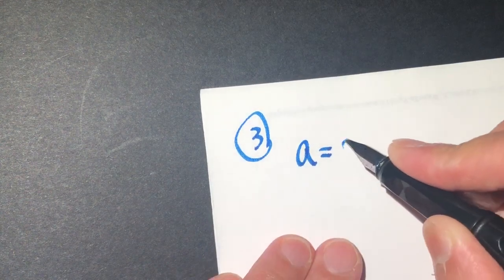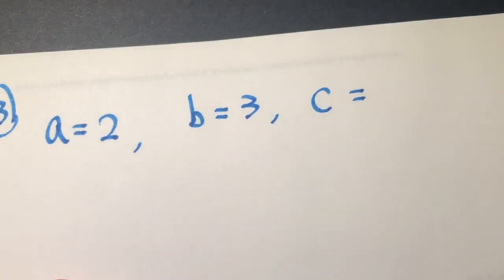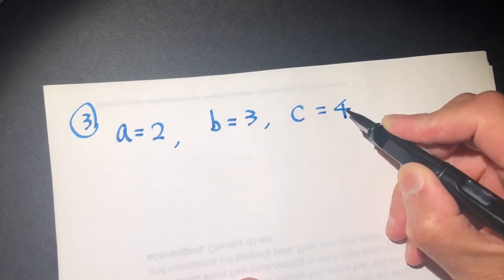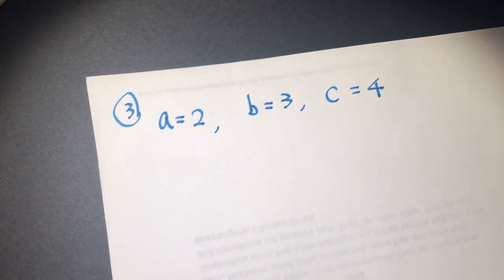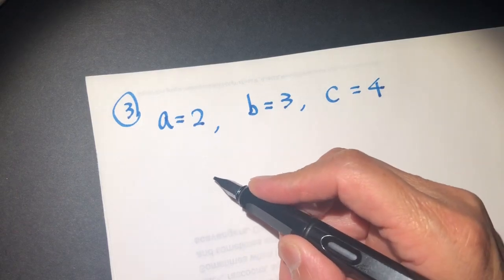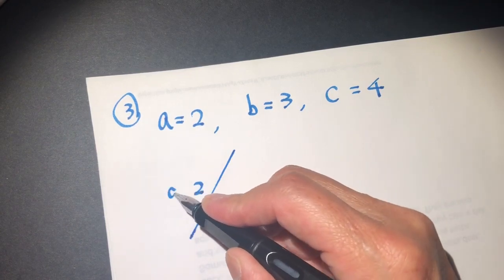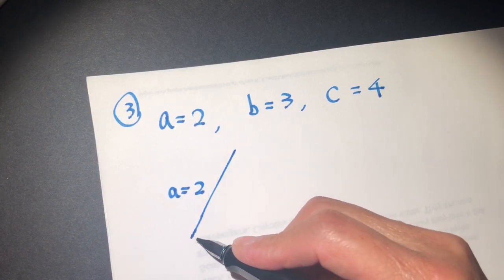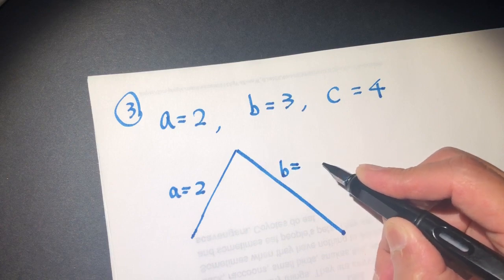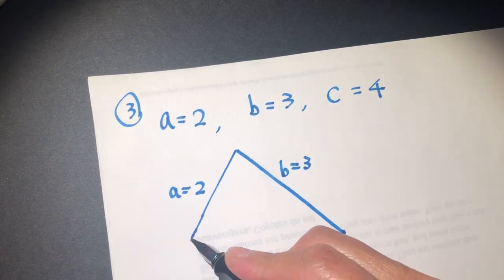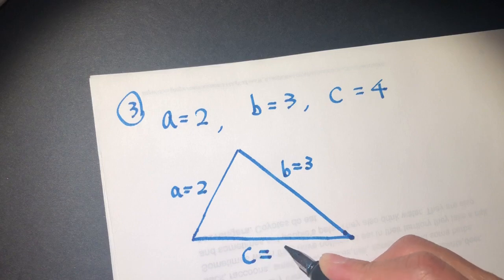I copy the problem — question number three. A equals 2, B equals 3, C equals 4. So we have three sides given. To begin with, we will need to draw the picture. We have one side A equal to 2, another side B equal to 3, and the last side C equal to 4.